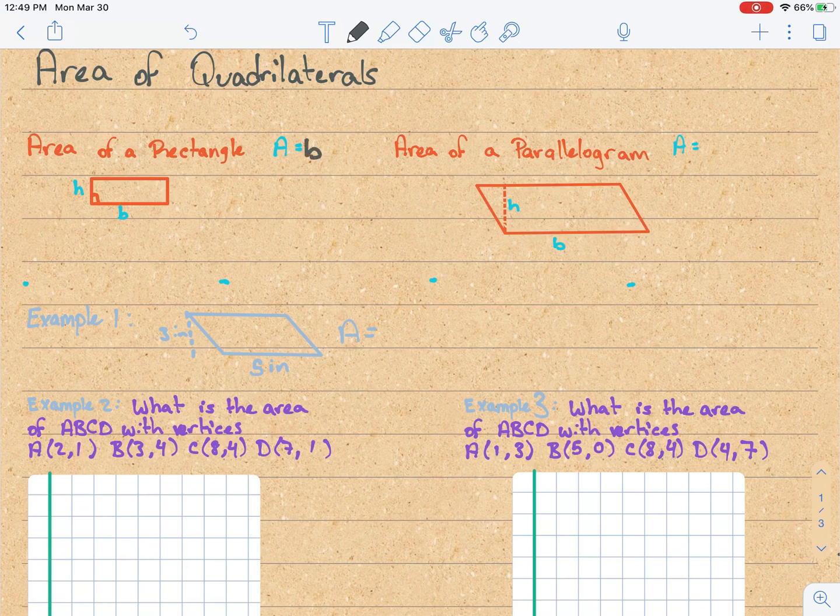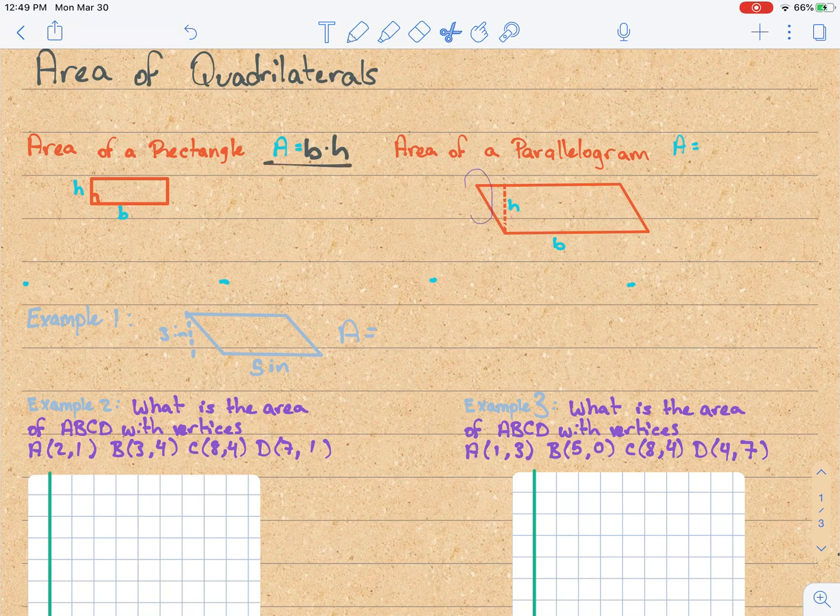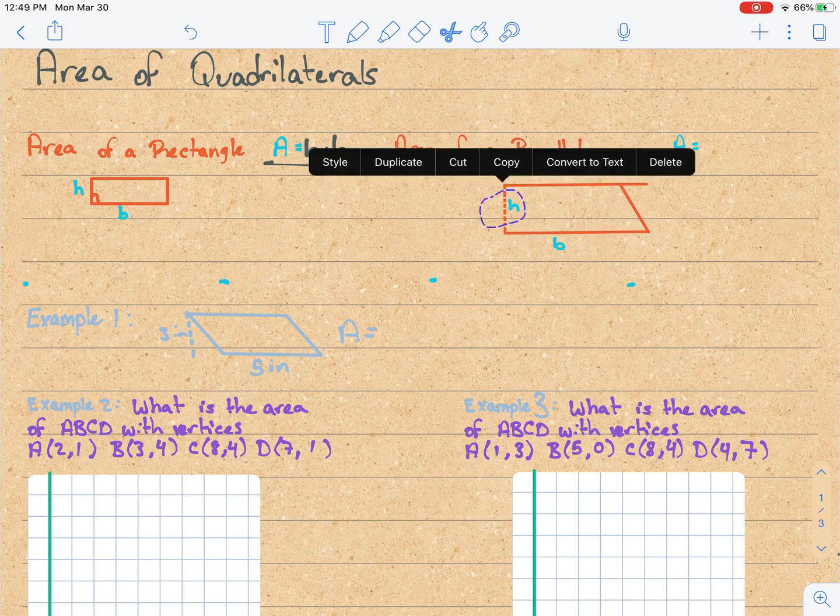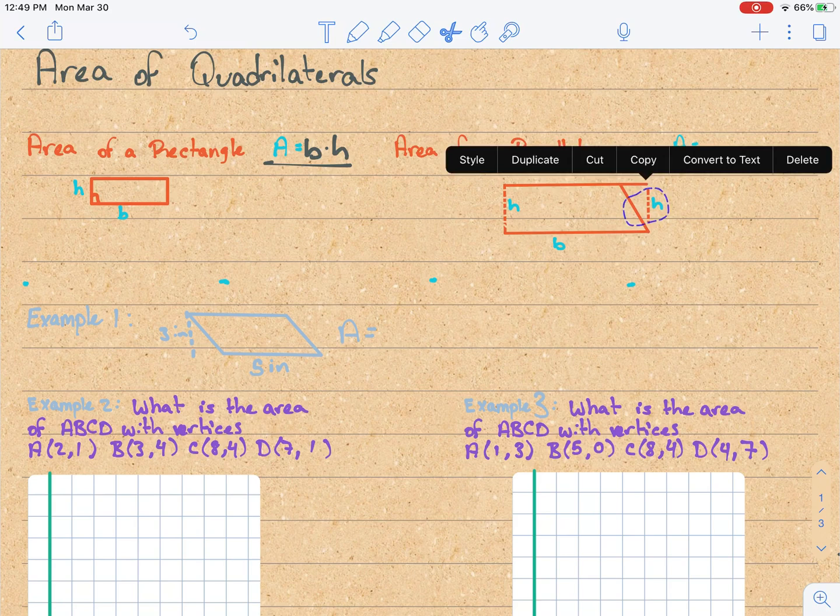We'll start with a familiar one. The area of a rectangle is base times height. So here's a parallelogram, similarly base b, height h. I'm just going to slide over this segment and we can turn our parallelogram into a rectangle. Because this has the exact same area, similarly the area of a parallelogram is also base times height.